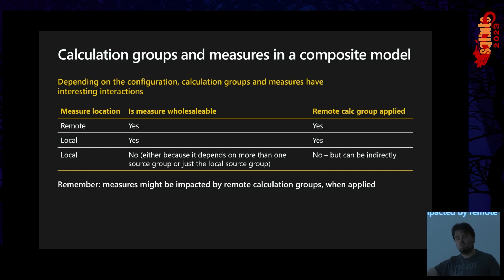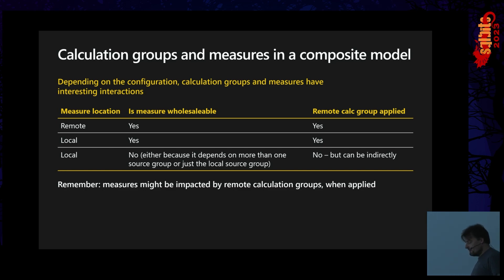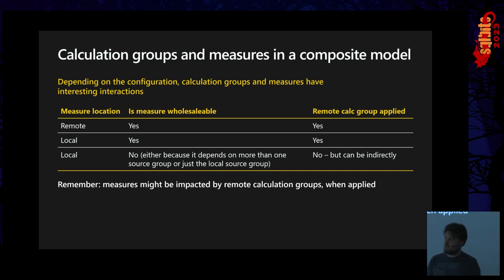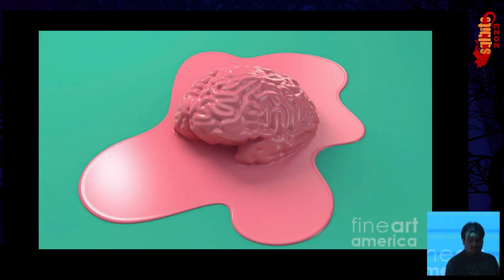A workaround is to define a local calculation group that mirrors the remote one, so the user has to switch both slicers from Actuals to Year-to-Date — but that means clicking twice. You could use sync slicers, but that has its own performance issues. All of this non-wholesale complexity only applies when you use composite models on top of a Power BI dataset or Analysis Services model with remote measures and a remote calculation group. For SQL Server sources this is not a concern.